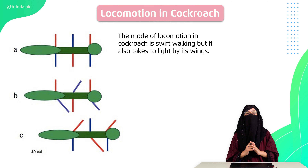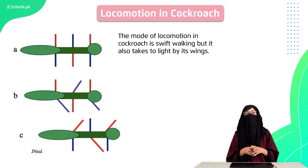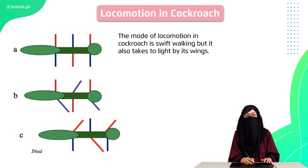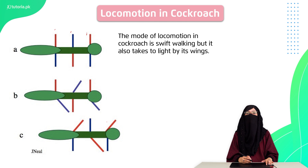Then we have the earthworm, for which three things help in locomotion: circular muscles, longitudinal muscles, and setae. The contraction and relaxation of circular and longitudinal muscles moves the earthworm forward, and setae provide attachment. Then we have the cockroach — it has three pairs of legs: front feet, middle feet, and hind feet. In alternating movement, the cockroach moves forward. The cockroach also has wings which help it fly.